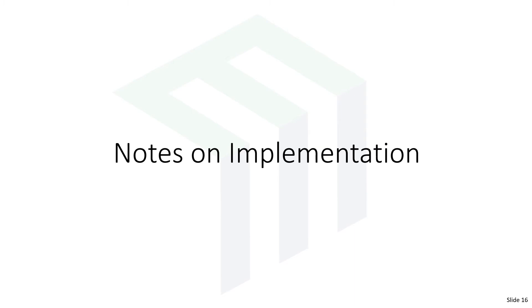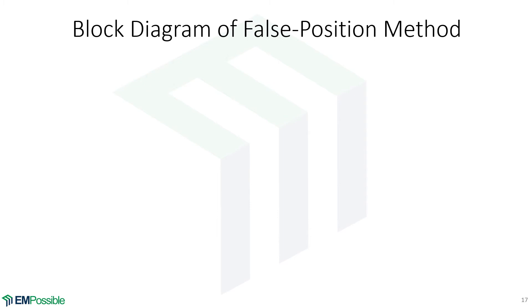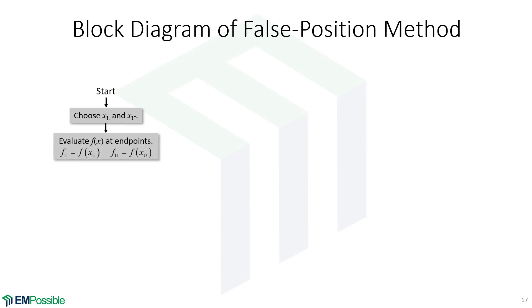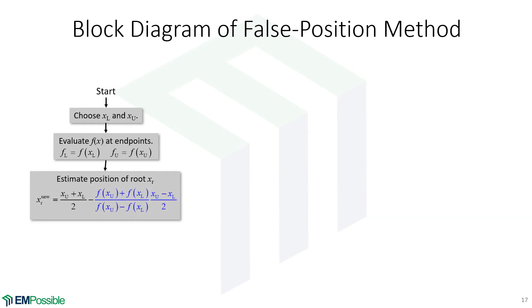Notes on implementation. Let's step through a block diagram of the false position method. We start with the function and choose lower and upper bounds that span a single root. We evaluate the function at the endpoints — remember, every function evaluation could take a very long time, so we want to minimize the number of calls. That's two calls to our function. Then we estimate the position of the new root using our equation. The first part (in black) is the bisection method; adding the second part makes it the false position method.